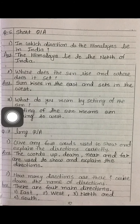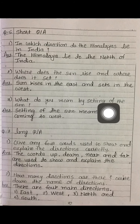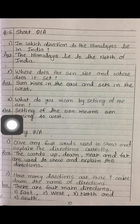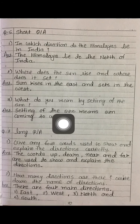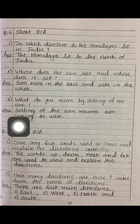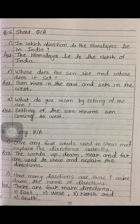Now see the third question: what do you mean by setting of the sun? The answer is: setting of the sun means the sun coming to the west — the sun is moving towards the west, which means the sun is setting and going in that direction.